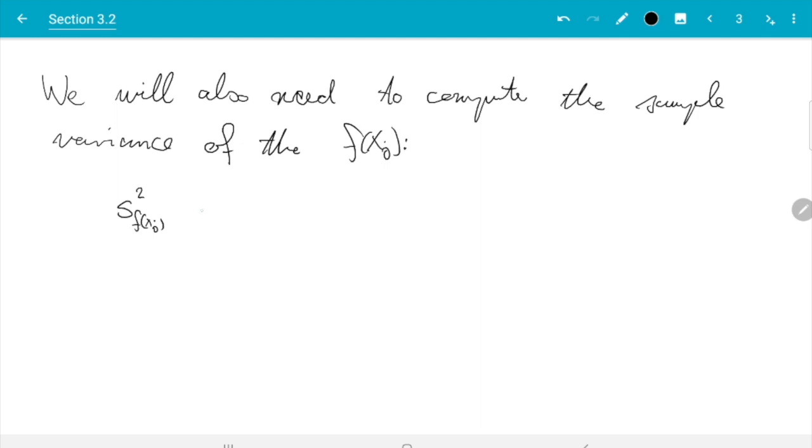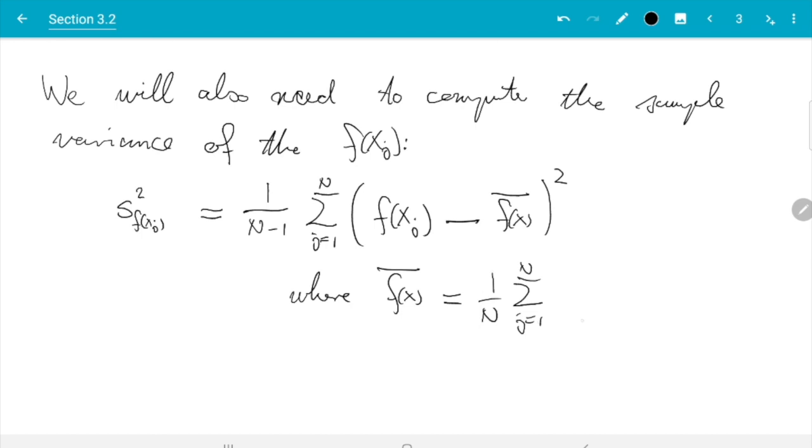We will also need to compute the sample variance of the f(X_J). The formula for the sample variance, it's often written as s squared. That is 1 over N minus 1 sum j from 1 to N of (f(X_J) minus the average)^2. That's the standard formula of the sample variance, where this f(X_bar) is notation I introduced for the average of the f(X_J). That is 1 over N sum j from 1 to N of f(X_J).